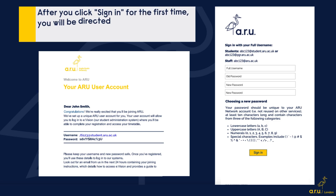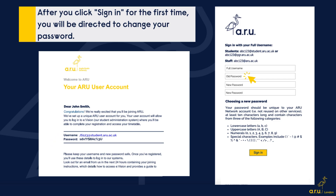After you click sign in for the first time, you will be asked to change your password. First, you need to enter the details from the email — your username and the one-time password. Then you need to select a new password which is at least 10 characters long. It also needs to follow the requirements listed below. When you have chosen a new password, make sure you remember it, as you will need to use this many times during your degree.